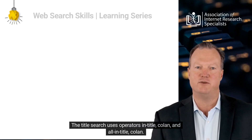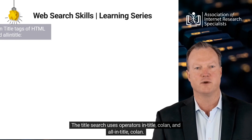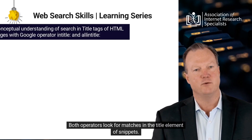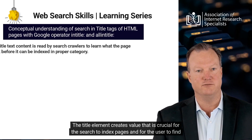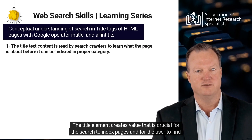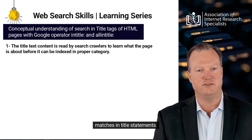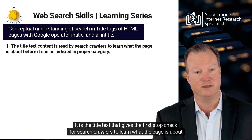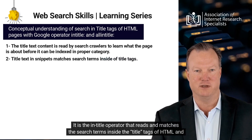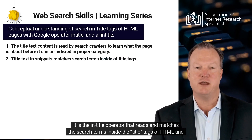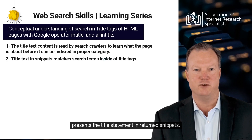The title search uses operators intitle: and allintitle:. Both operators look for matches in the title element of snippets. The title element creates value that is crucial for the search to index pages and for the user to find matches in title statements. It is the title text that gives the first stop check for search crawlers to learn what the page is about before it can be indexed in the proper category. It is the intitle operator that reads and matches the search terms inside the title tags of HTML and presents the title statement in returned snippets.